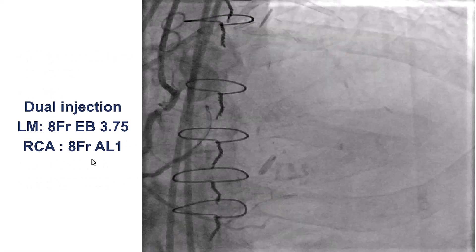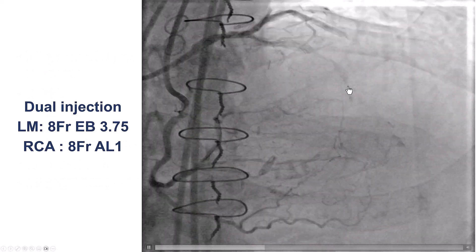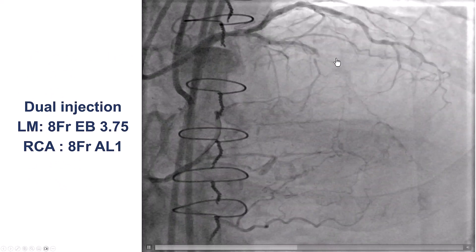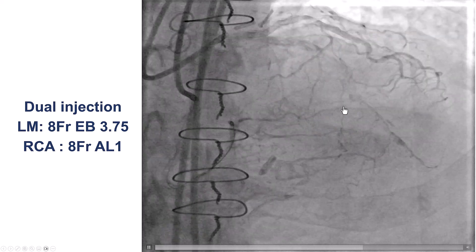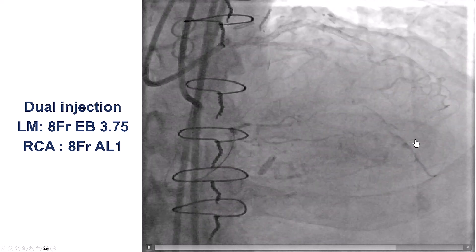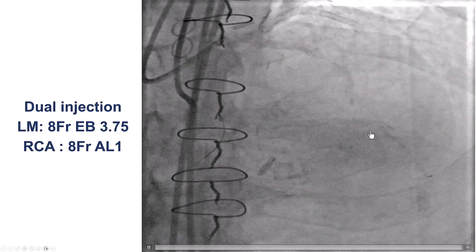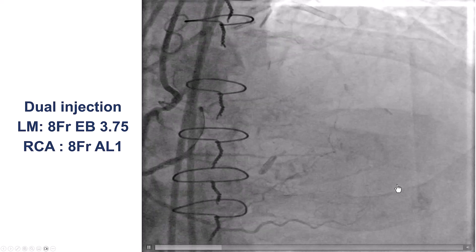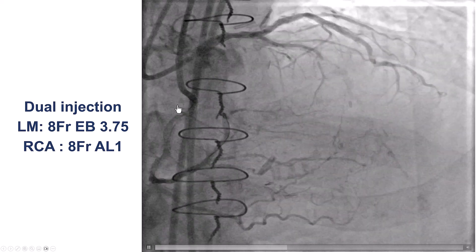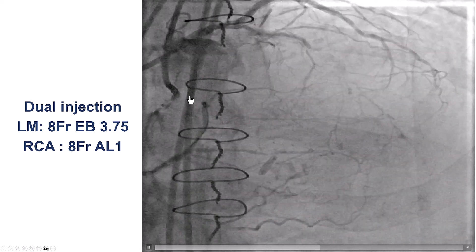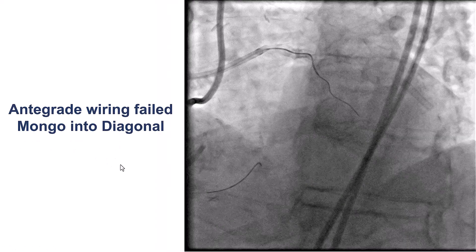This is the anatomy. The LAD is heavily calcified. The mid and distal LAD are filling through collaterals, mainly from the right coronary artery. This is a dual injection from the right and the left using eight French guides.